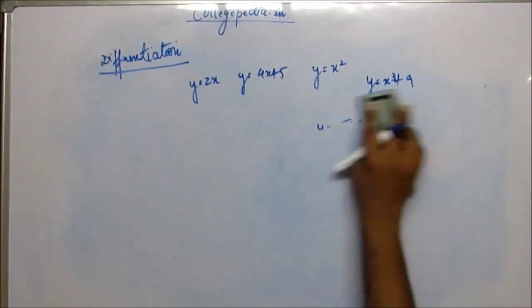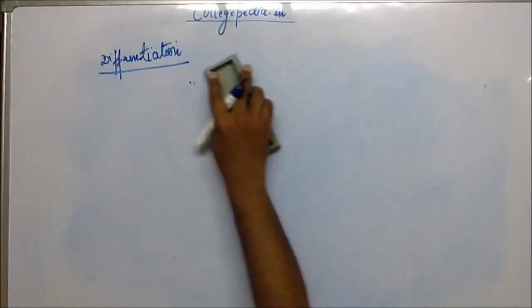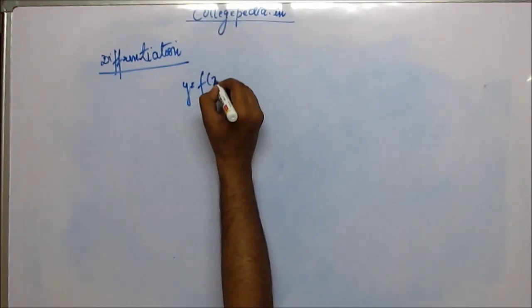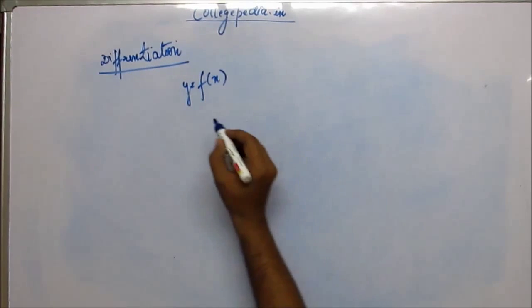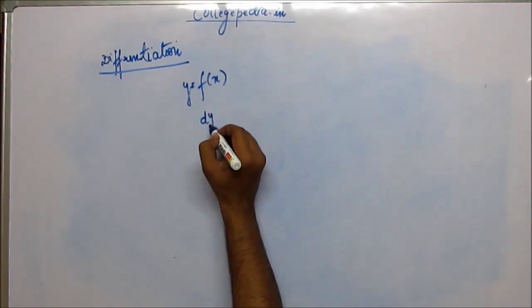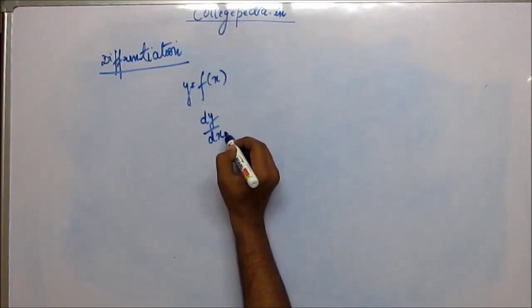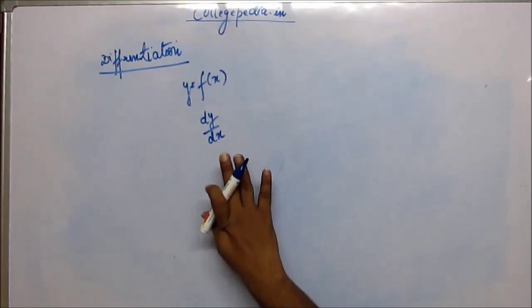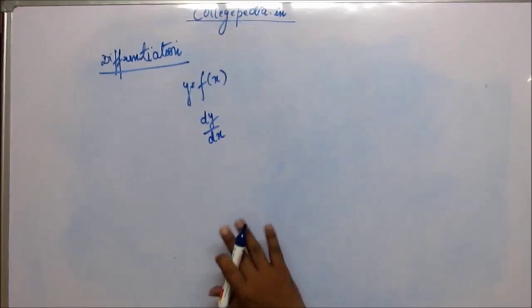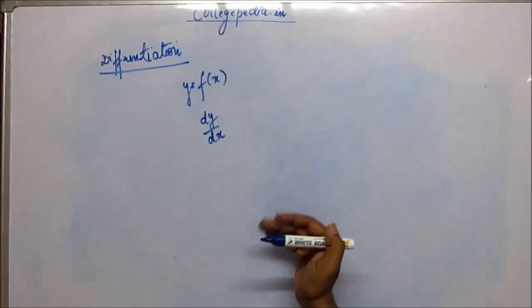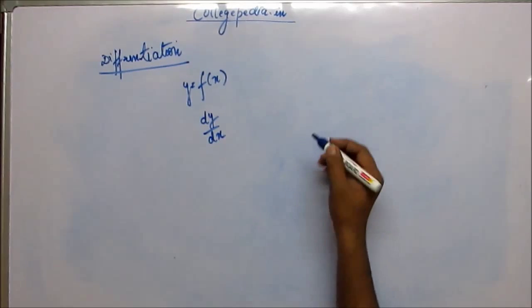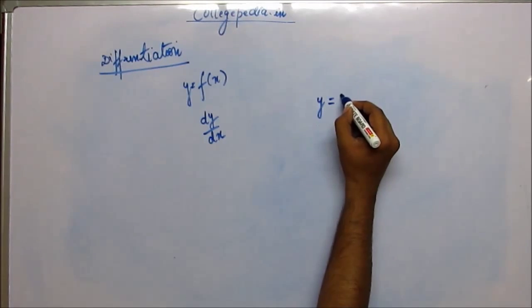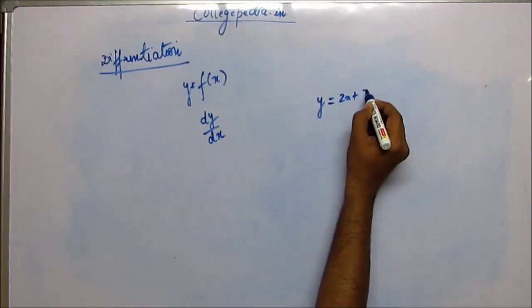Suppose y is actually a function of x — we write y is equal to f(x). Now we define a quantity called dy by dx. dy/dx is called differentiation of y with respect to x, or change in y with respect to x. For example, let's consider a simple linear equation: y is equal to 2x plus 3.